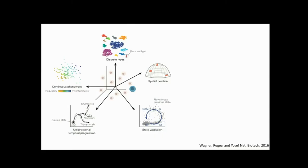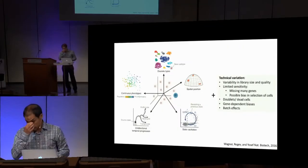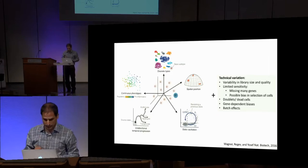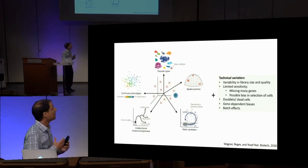When we look at single-cell RNA-seq data, as some of the speakers before me talked about, we have all of this amazing variability that we can see and learn new things about biology from. But we need to be very careful when we look at this data as it comes out of the sequencer, because in addition to biological variability between single cells, an additional component that really dominates the variability is the technical component.